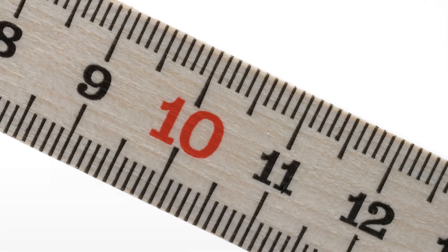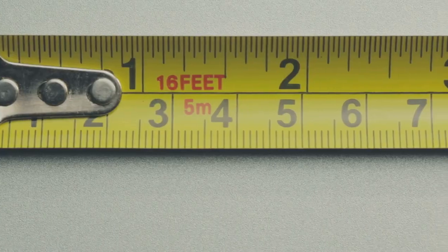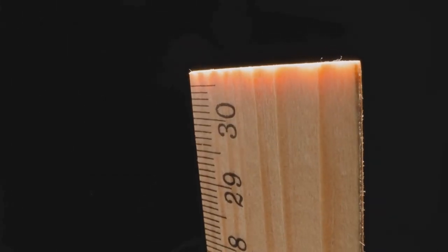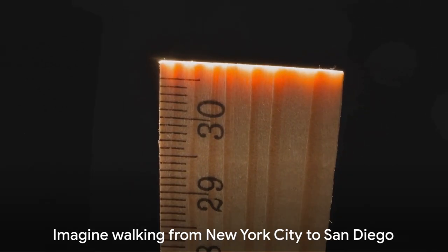It's a unit so small that our regular understanding of size simply doesn't do it justice. A nanometre is a billionth of a metre. That's nine orders of magnitude smaller than a metre, or less than 0.00000004 inches.